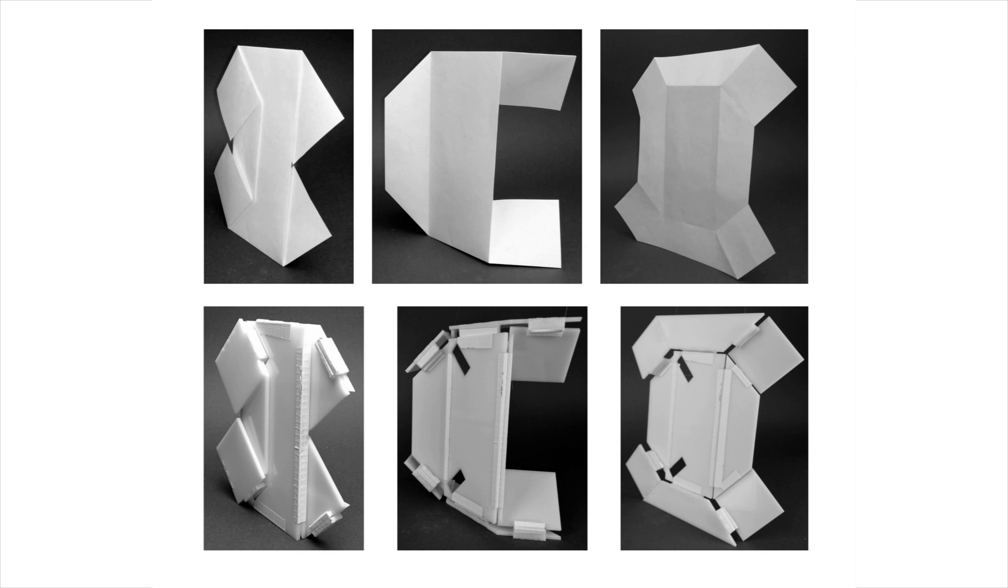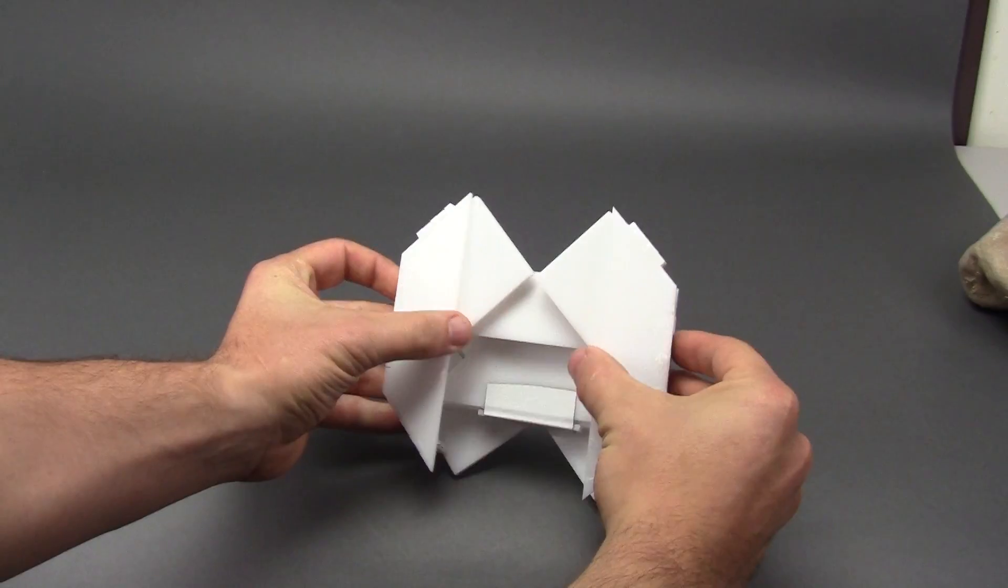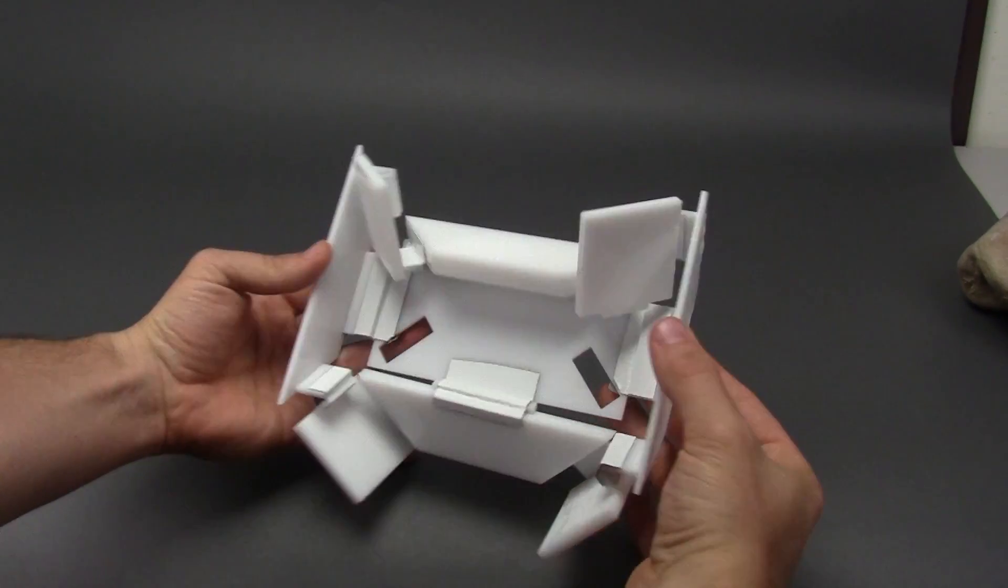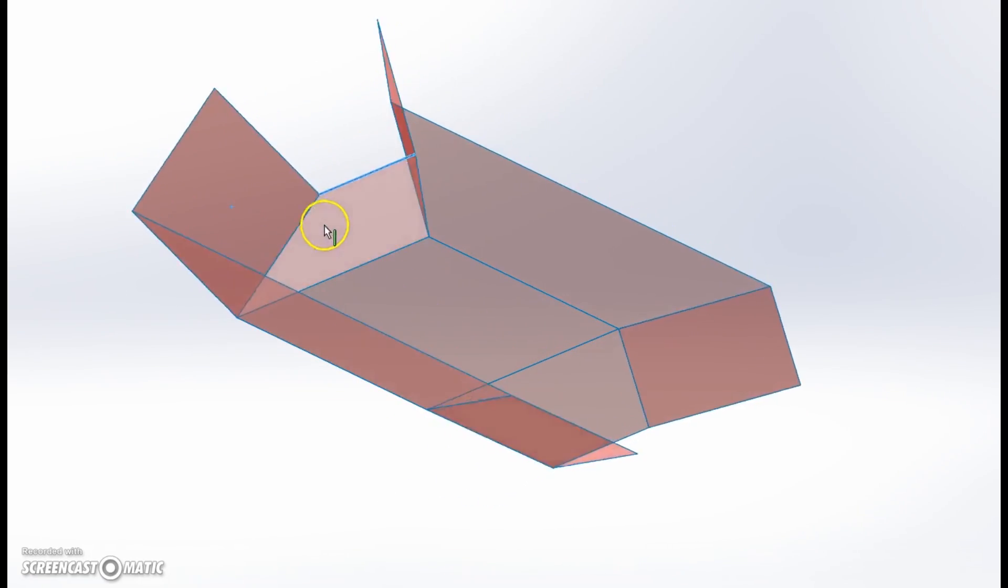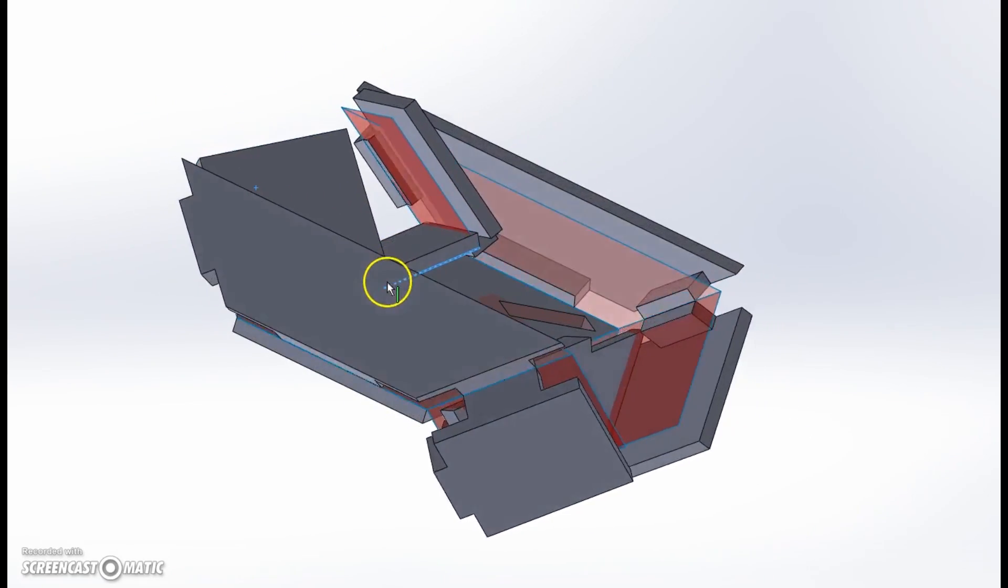This paper discusses capabilities of the offset panel technique and verifies the method and capabilities in hardware. The offset panel technique is a method for accommodating thick materials in origami design. It preserves both the kinematic behavior and the range of motion of an origami pattern.